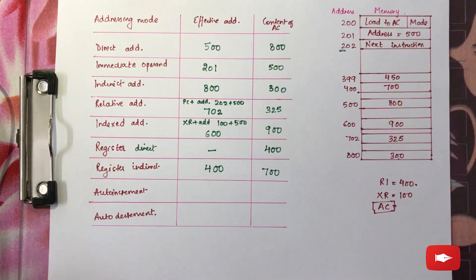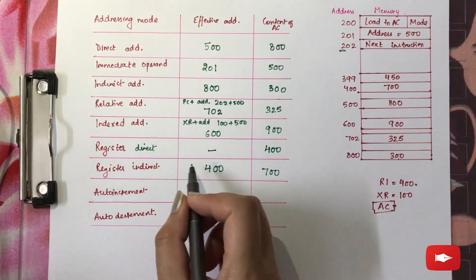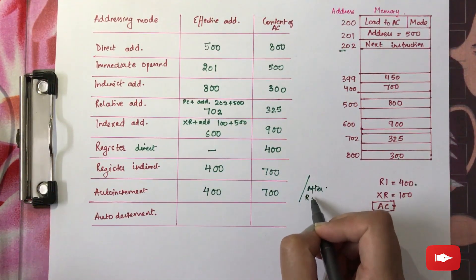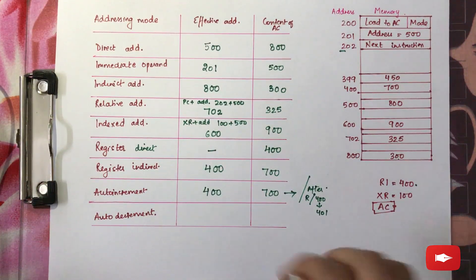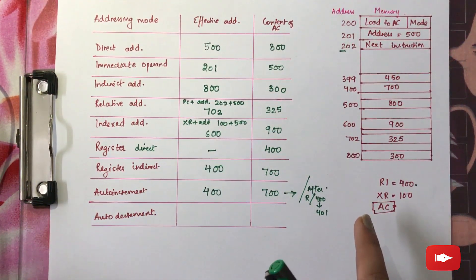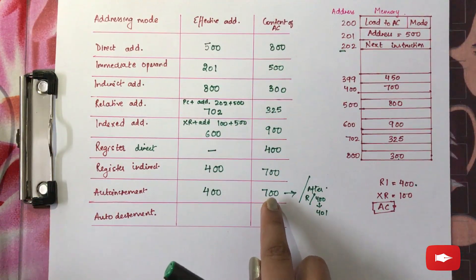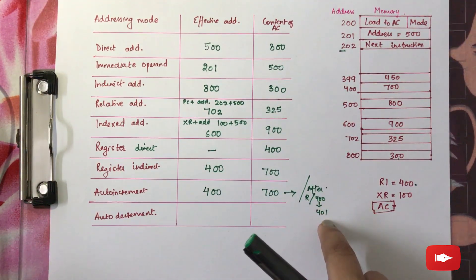Next is auto increment mode. Auto increment mode increments the value of the register by 1, but after the execution of the instruction. Therefore, there will be no effect on the effective address and content of the accumulator — it will remain the same as register indirect mode. But after execution, the value of the register will become 401 instead of 400. This increment is done after the execution of the instruction, so there is no effect on the effective address or accumulator content prior to instruction execution.